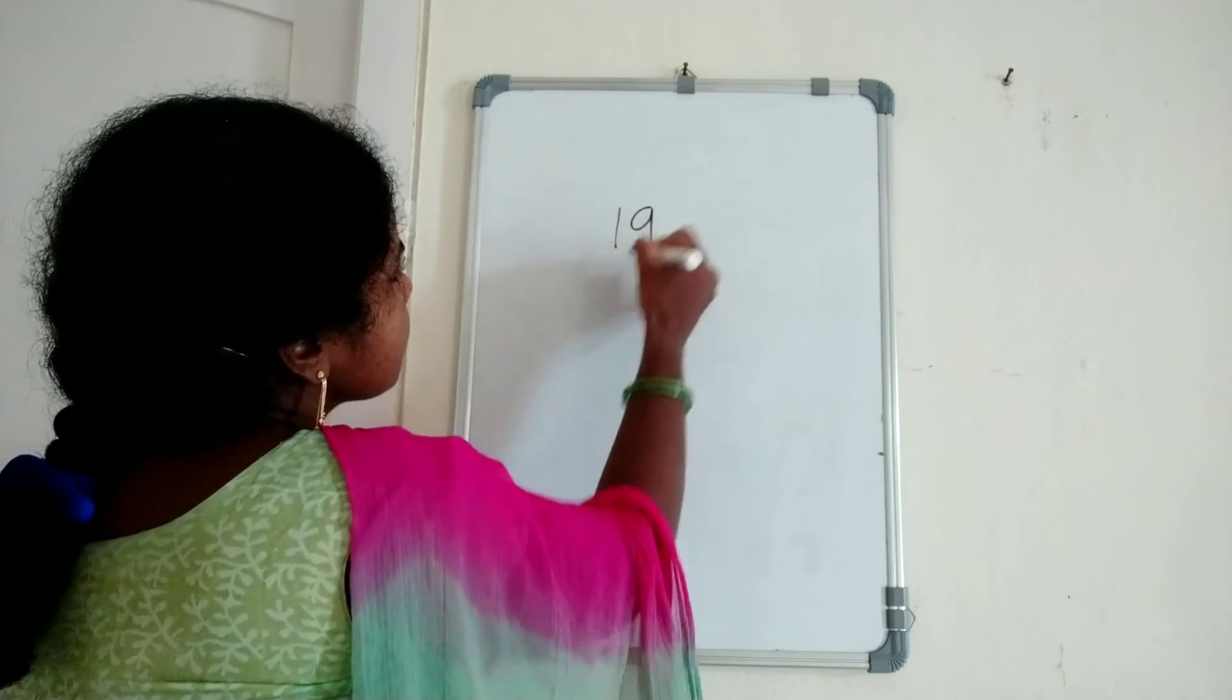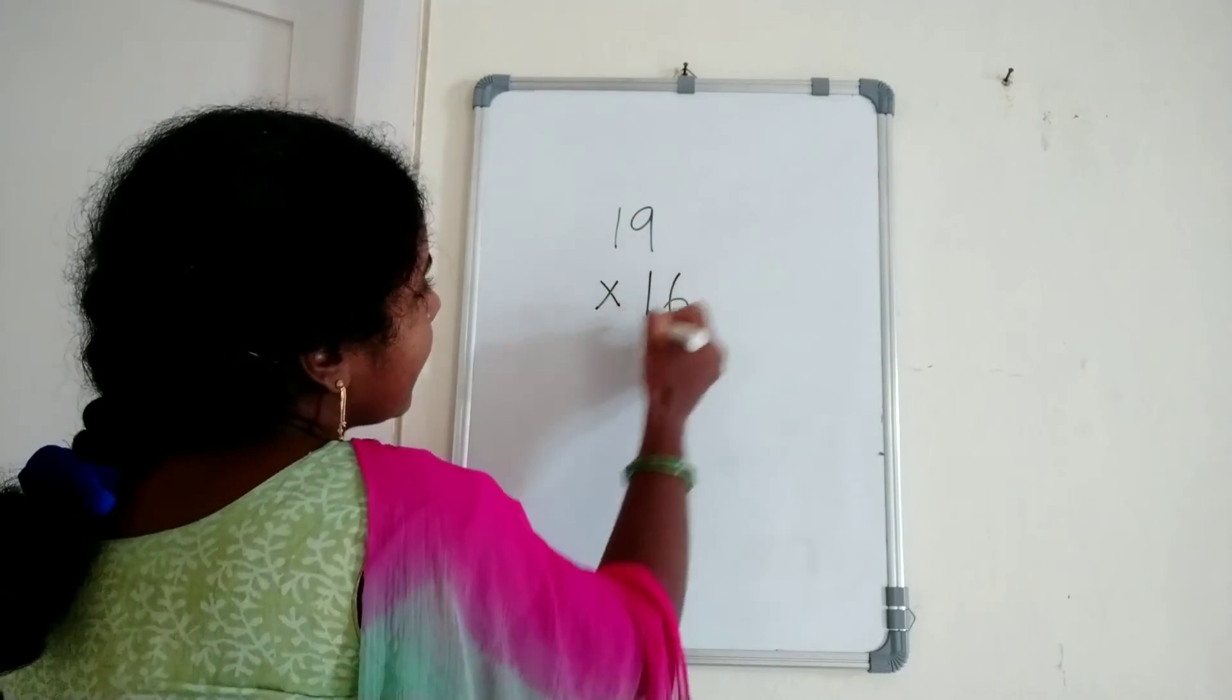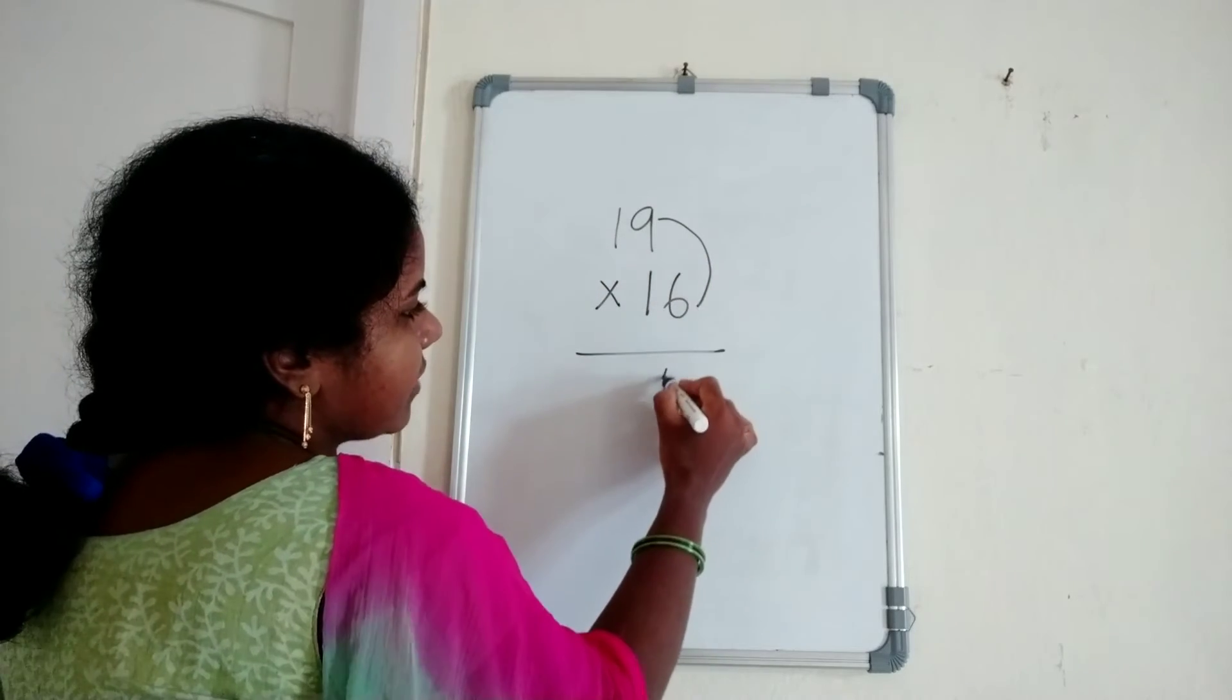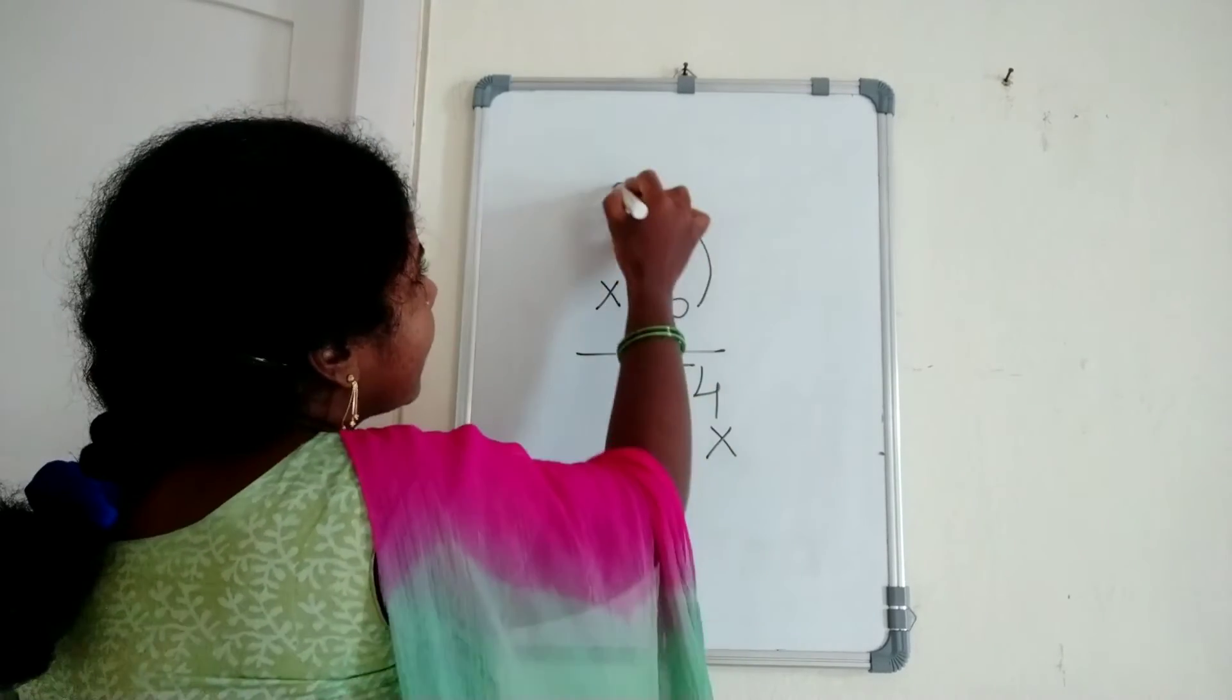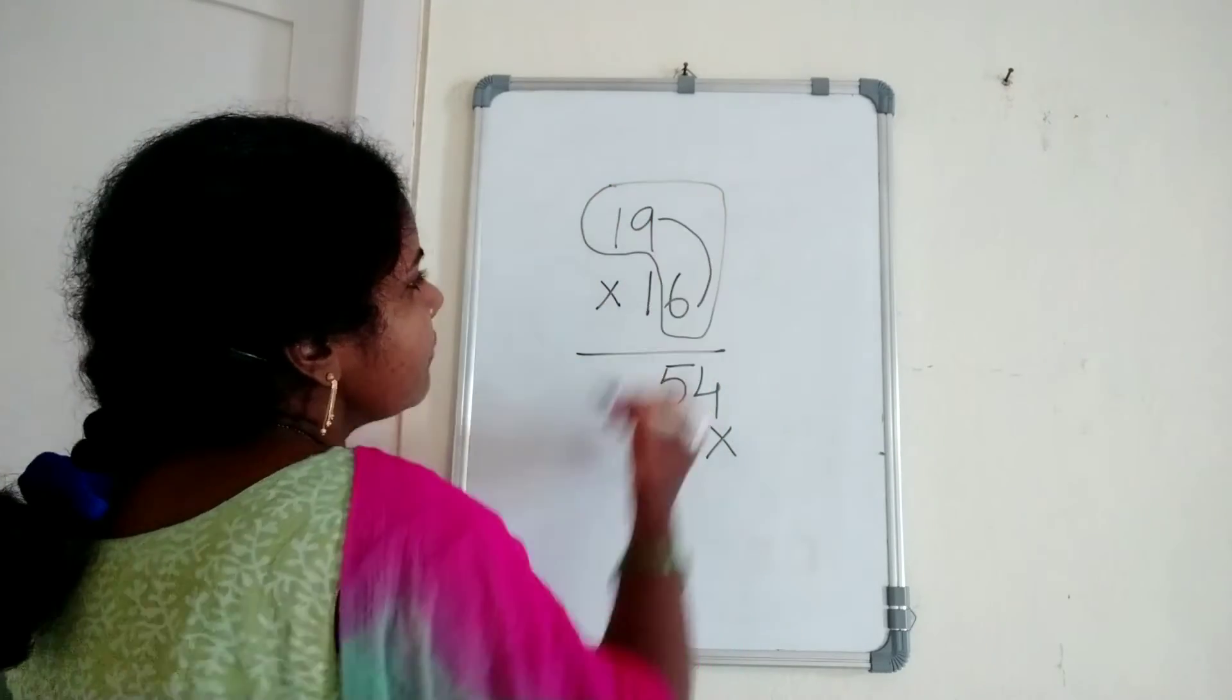19 times 16. Multiply 9 times 6, equals 54. Leave the ones place number. 19 plus 6 is 25.